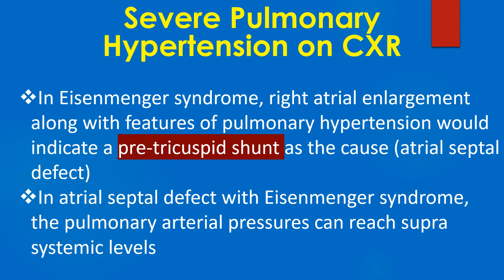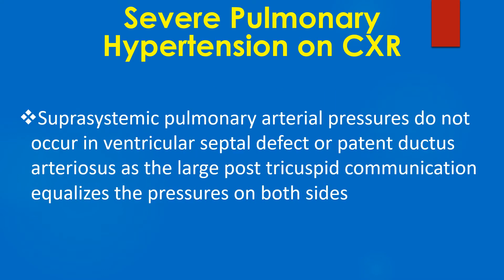In atrial septal defect with Eisenmenger syndrome, the pulmonary arterial pressures can reach suprasystemic levels. Suprasystemic pulmonary arterial pressures do not occur in ventricular septal defect or patent ductus arteriosus, as the large post-tricuspid communication equalizes the pressures on both sides.